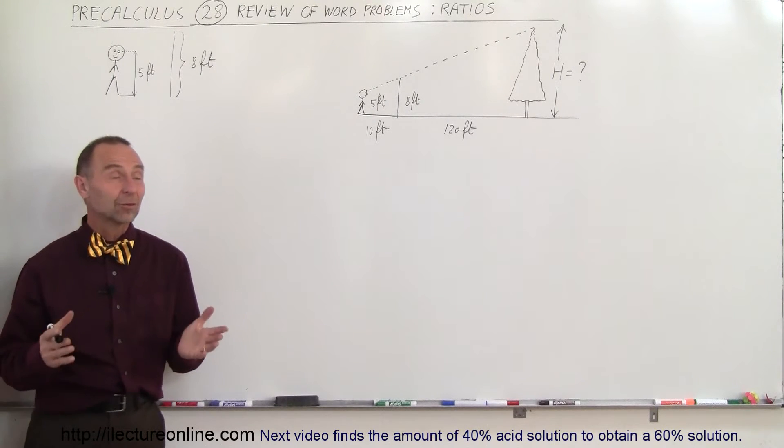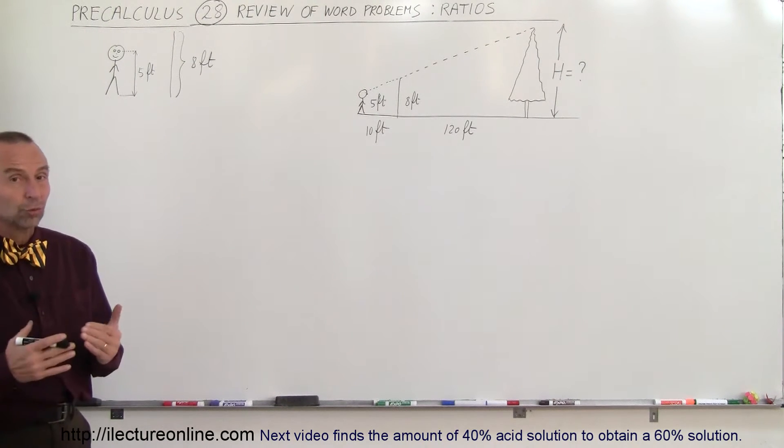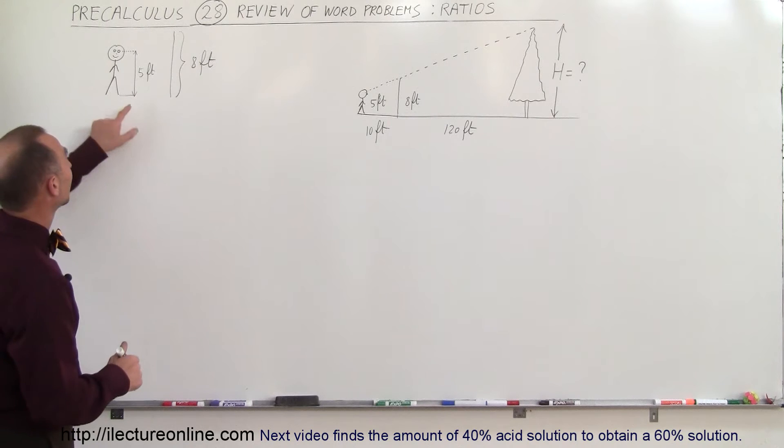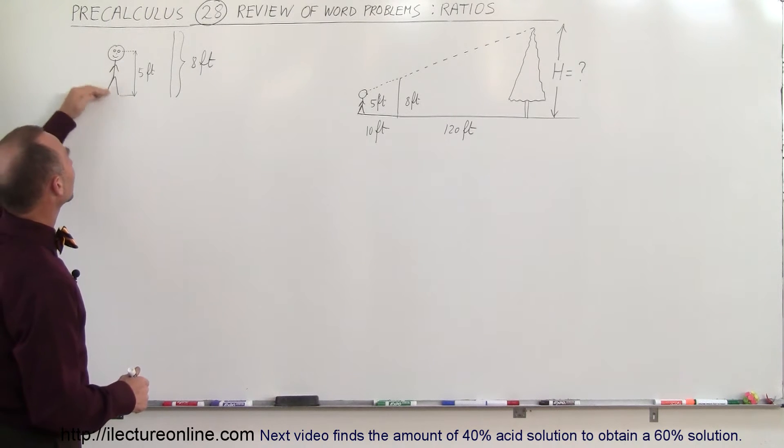Welcome to our lecture online. Now our next word problem deals with ratios. So what we have here is a person whose distance from the ground to the person's eyes is 5 feet.